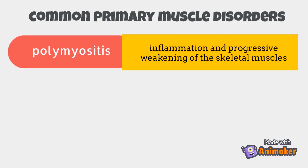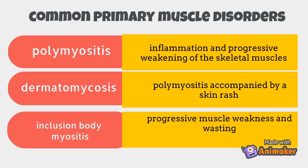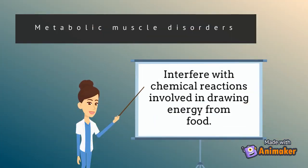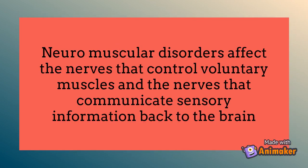Common primary muscle disorders include inflammatory myopathies: polymyositis, characterized by inflammation and progressive weakening of the skeletal muscles; dermatomyositis, which is polymyositis accompanied by a skin rash; and inclusion body myositis, characterized by progressive muscle weakness and wasting. Other common disorders are muscular dystrophies and metabolic muscle disorders.